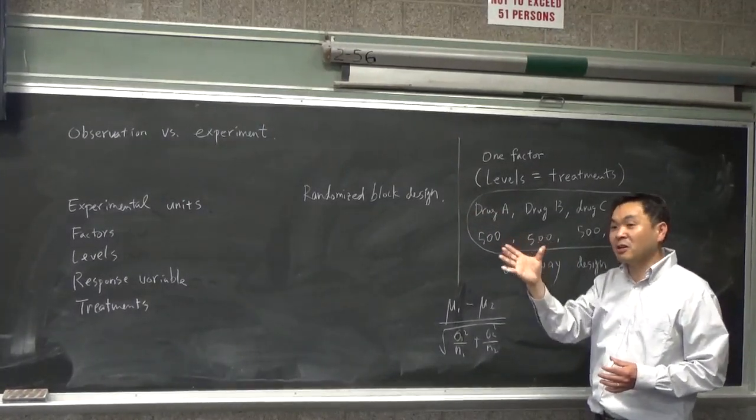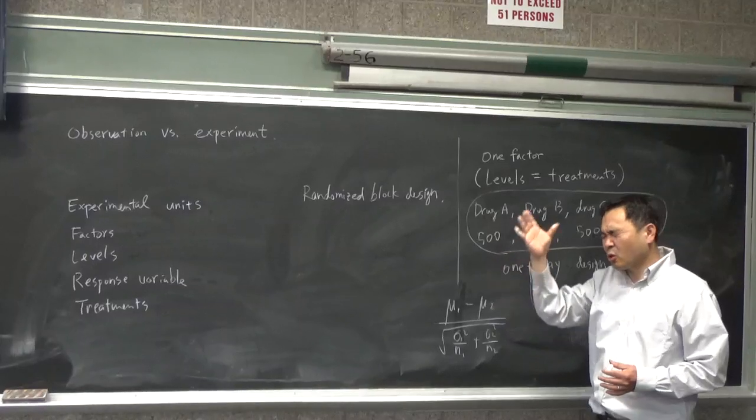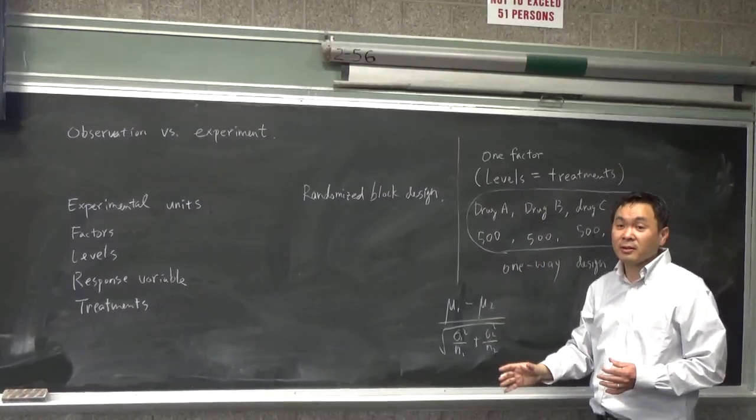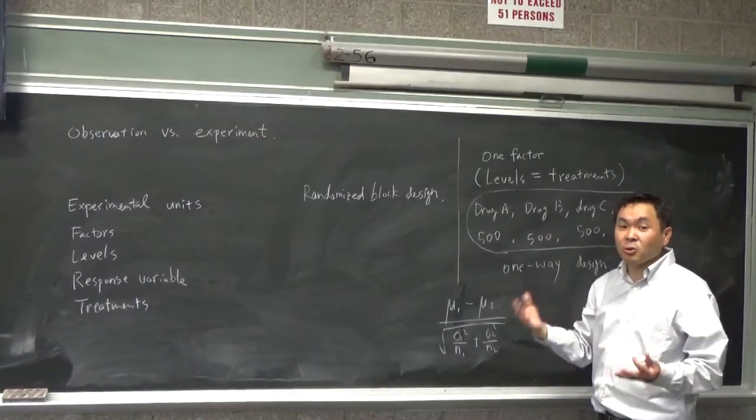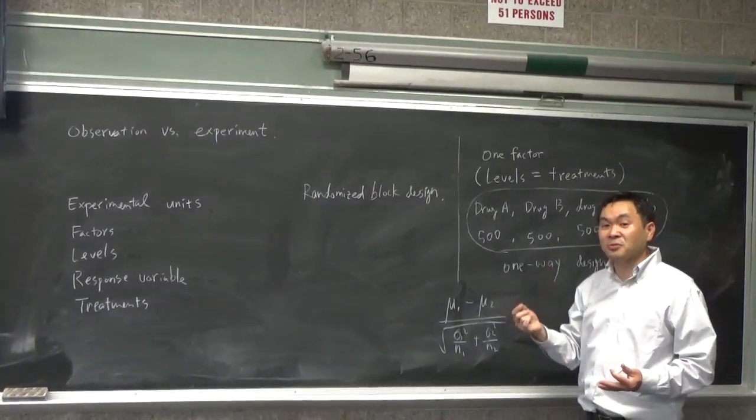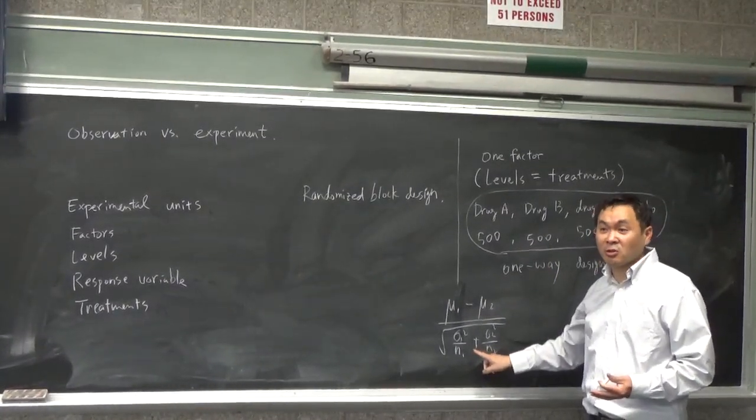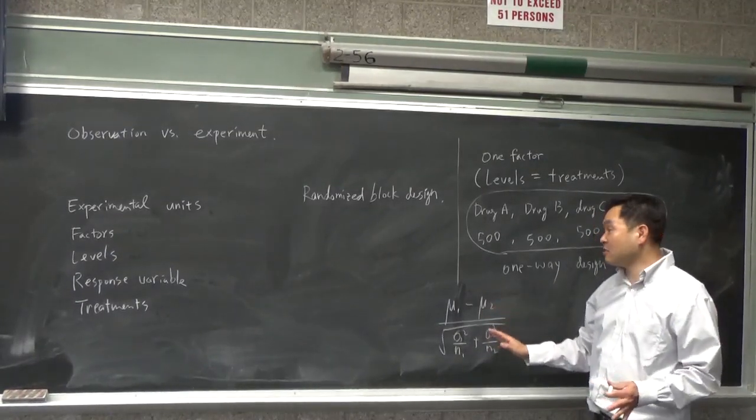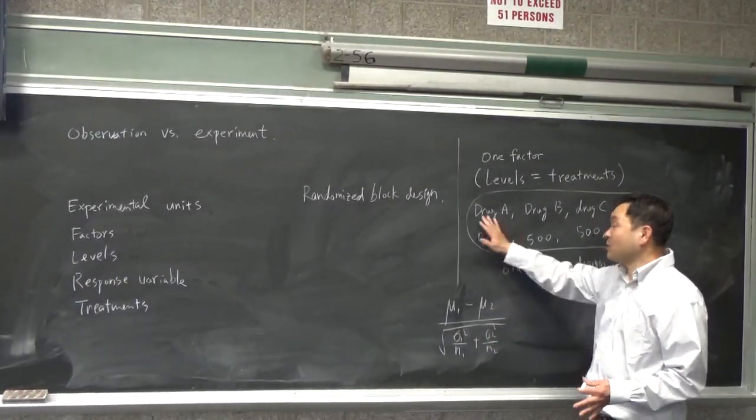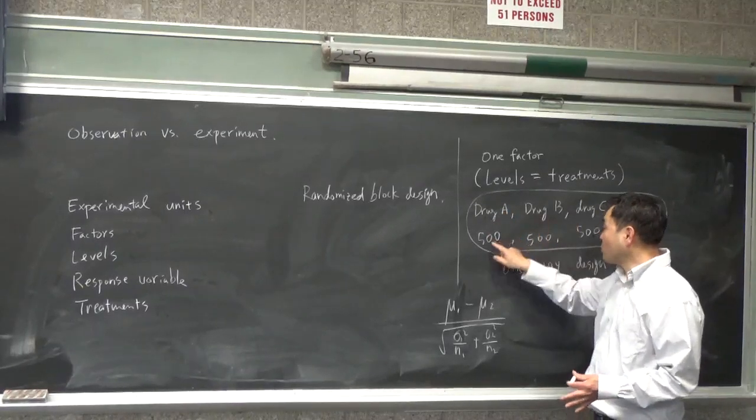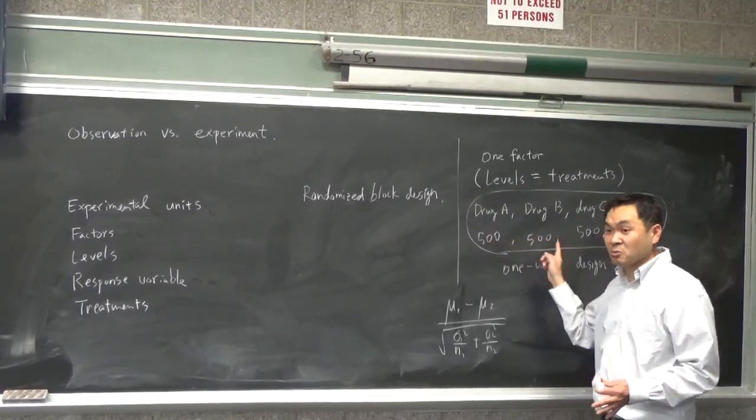then because you have the same experimental unit going through both, you kind of expect that there will be some kind of correlation between the two, okay? And if there's a correlation, we found out that the difference would have a smaller variance than this one. So that's what we calculated last time, okay? So paired design is better than just having chosen people without having any relationship between them, okay?